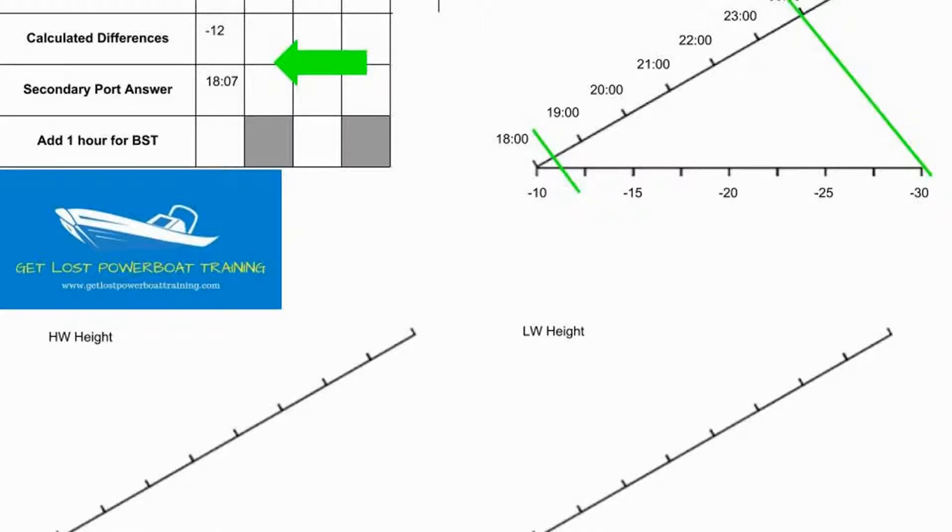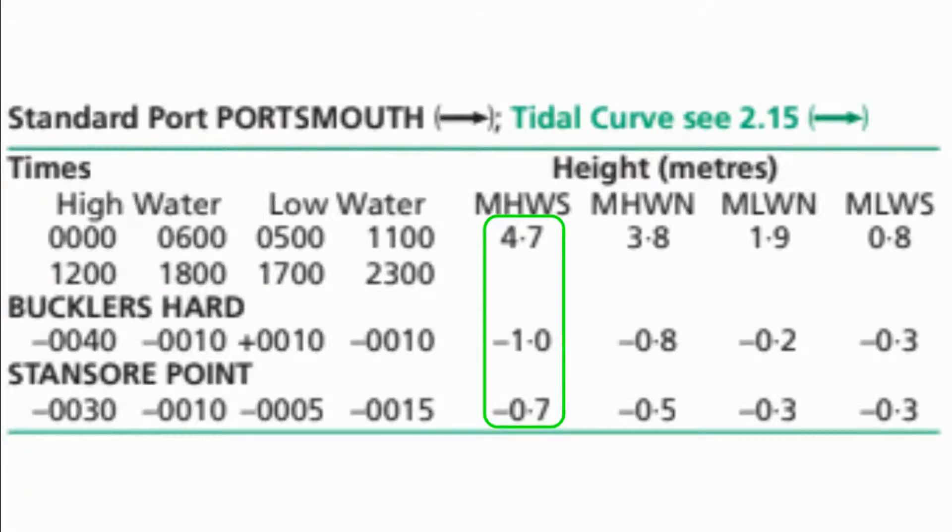Now that we've calculated our time at the secondary port the next thing to do is the next triangle which is to work out the high water height. If we refer back to our secondary port and standard port information table we can see that if high water at the standard port was 4.7 metres we'd have a difference of 0.7 at the secondary port. And if high water was 3.8 metres we would have a 0.5 metre difference at the secondary port or 3.3 metres. And we're on 3.9 metres which doesn't match exactly either 4.7 or 3.8 so we're going to have to fill out the triangle.